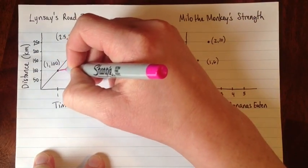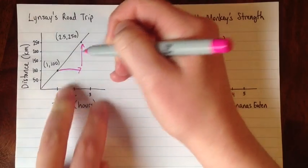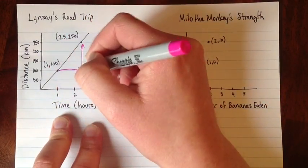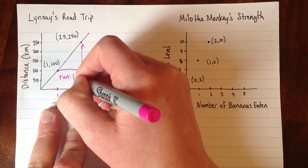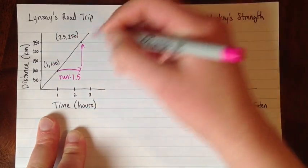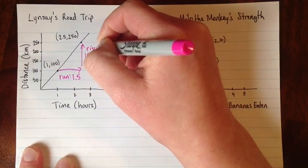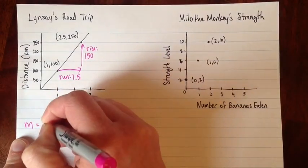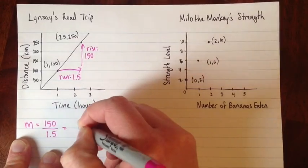If we calculate the slope, right over and right up, we can use the formula or we can use rise over run. So my run, I go from 1 to 2.5, so that's a run of 1.5. And my rise, I go from 100 to 250, so that's 150. So the slope is 150 divided by 1.5, which is 100.